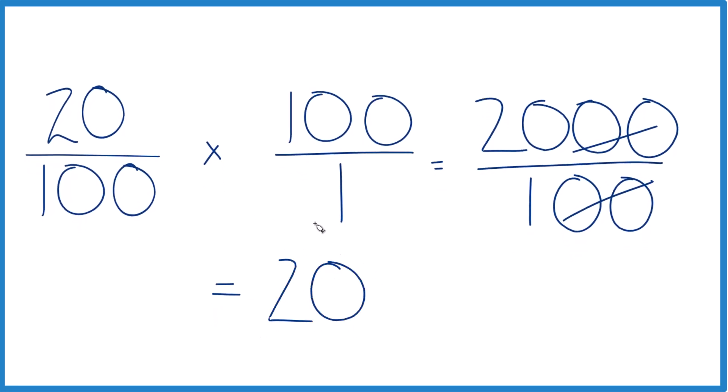So again, 20% of 100 is 20. You could also convert this to a decimal, divide 20 by 100, and multiply that by 100. You'd end up with 20. That's another way you might see this done.